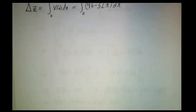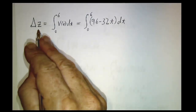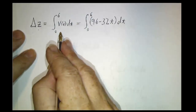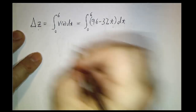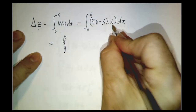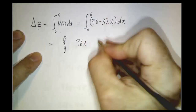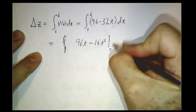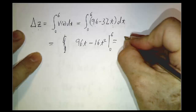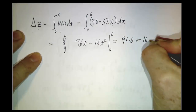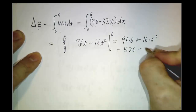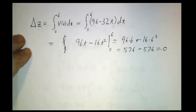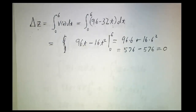Once we have the velocity, we can find the change in position. The change in position z (height) is the integral of velocity from 0 to 6: the integral of (96 minus 32t) dt. We need a function whose derivative is 96 minus 32t — that's 96t minus 16t². Evaluating from 0 to 6: 96(6) minus 16(6²) = 576 minus 576 = 0. The net change in position is zero — the ball was launched, went up, and six seconds later hit the ground right back where it started. Final position minus initial position equals zero.